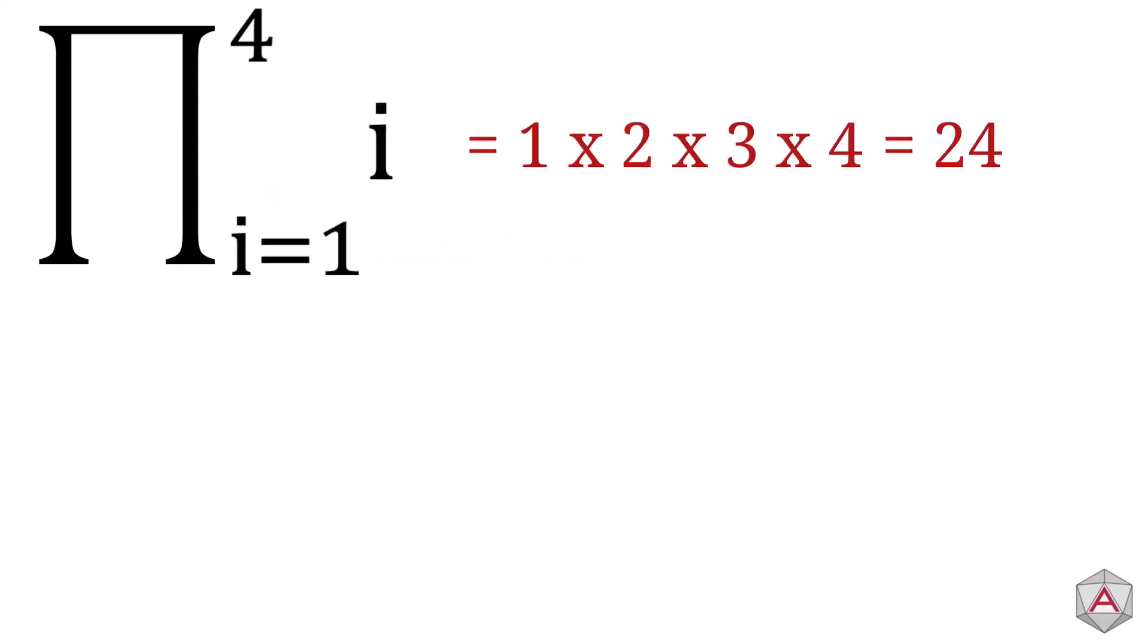Uppercase pi is the product notation. The product notation is typically written like this and translates to 1 times 2 times 3 times 4.